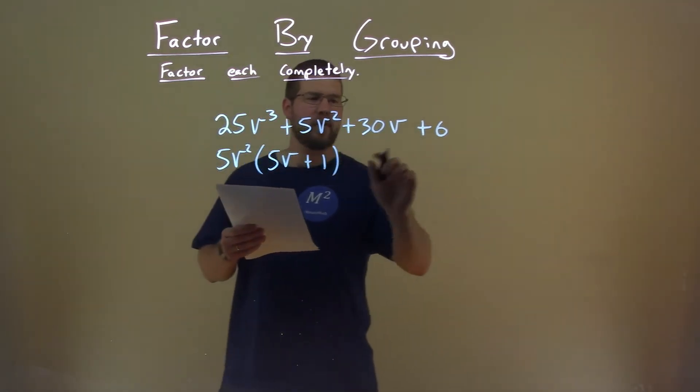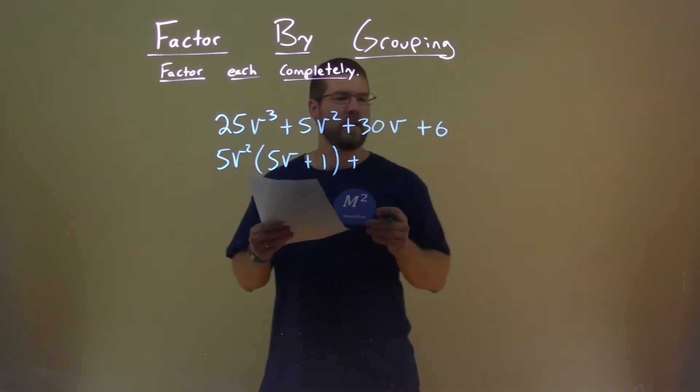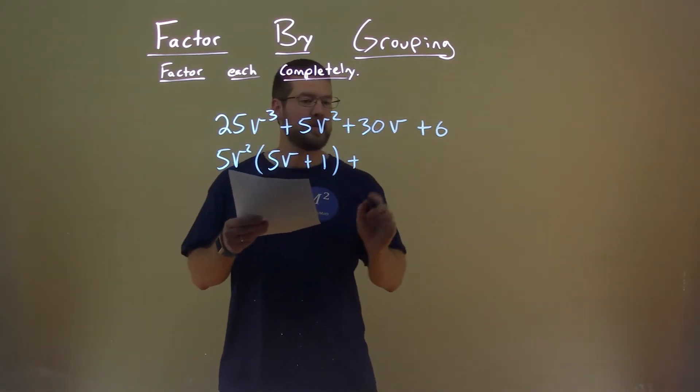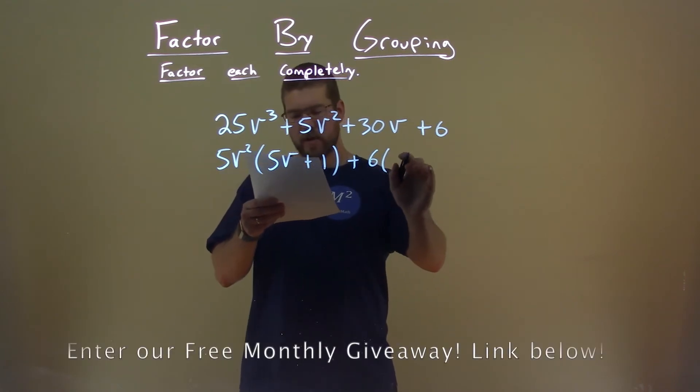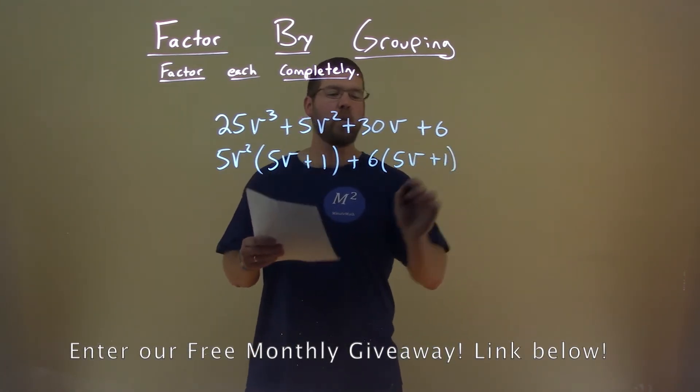All right, second part right here. What do we have? Well, a 30v and a 6 both have 6 in it. Pull out a 6, and we're left with a 5v plus 1 here.